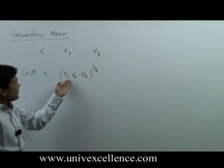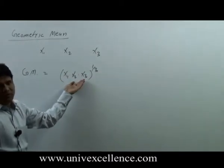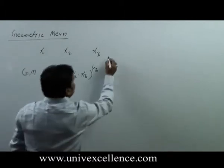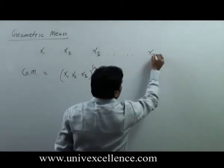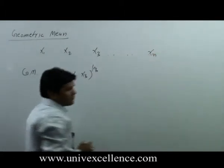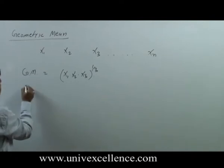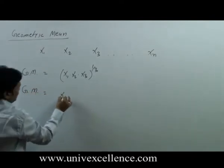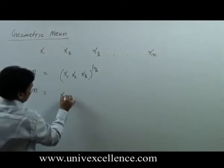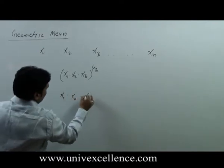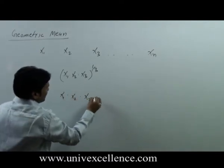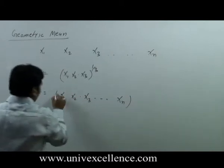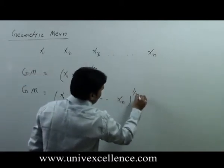Similarly, if we have n values, then the geometric mean in that case will be x1 multiplied by x2 multiplied by x3, up to multiplied by xn, to the power 1 by n.